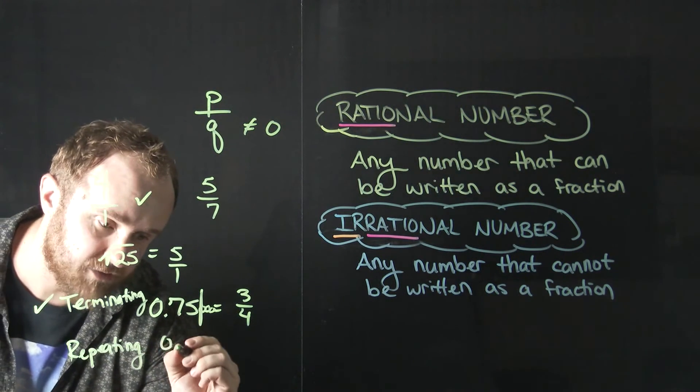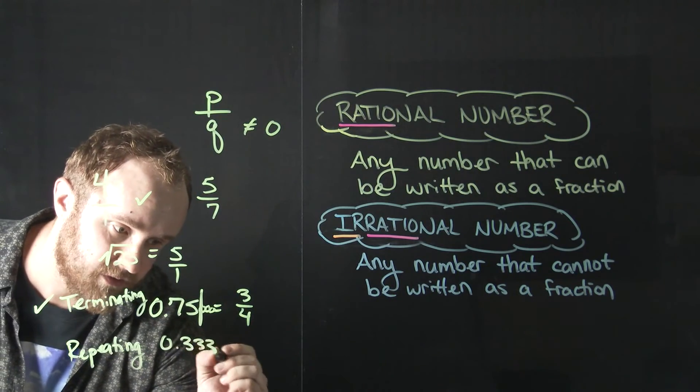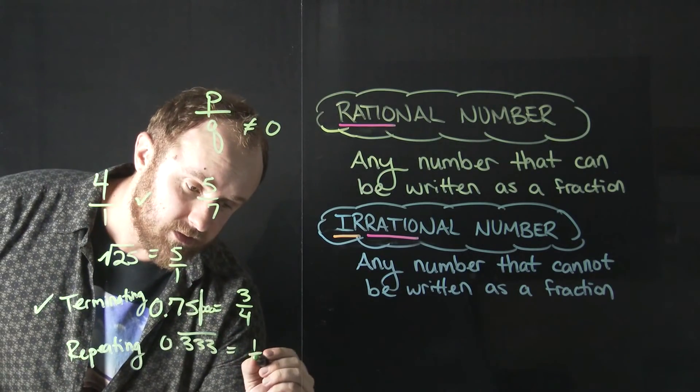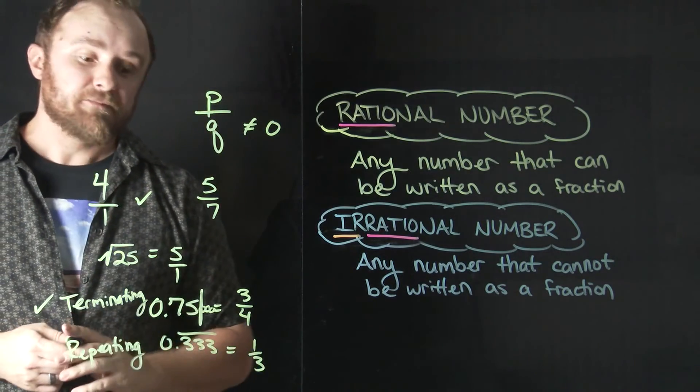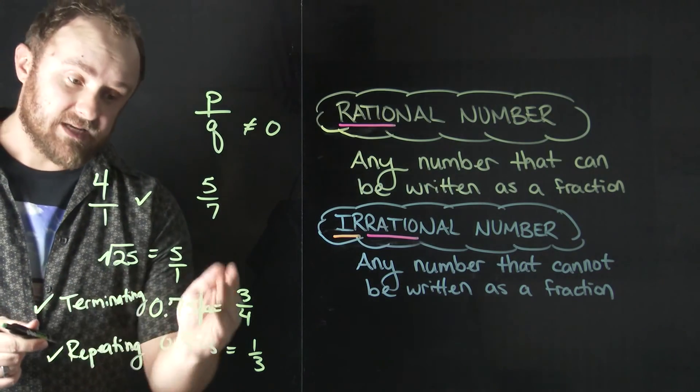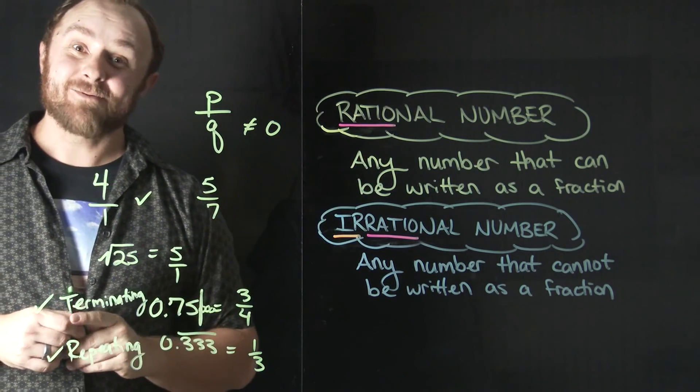So for example, I could write the decimal 0.333, you know, and that's just repeating forever and ever and ever. And a lot of us know that that's equal or equivalent to the fraction one third. So decimals that are written in repeating form or decimals that terminate are also rational numbers. Thanks for watching.